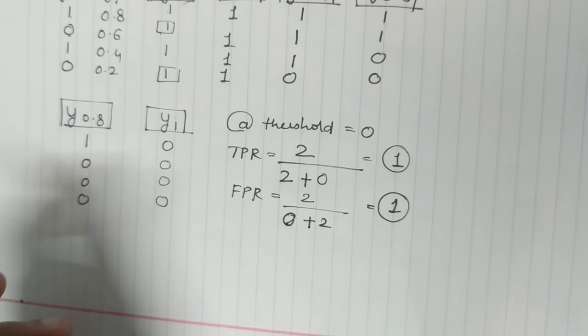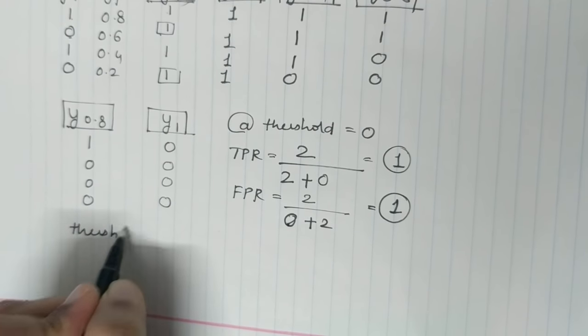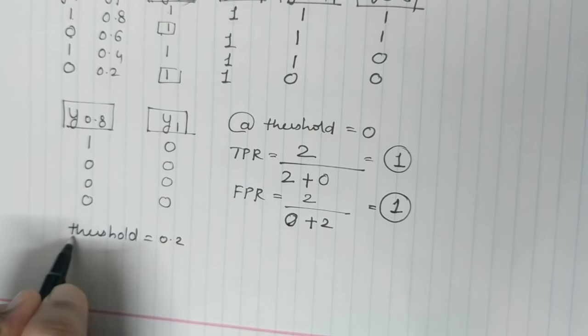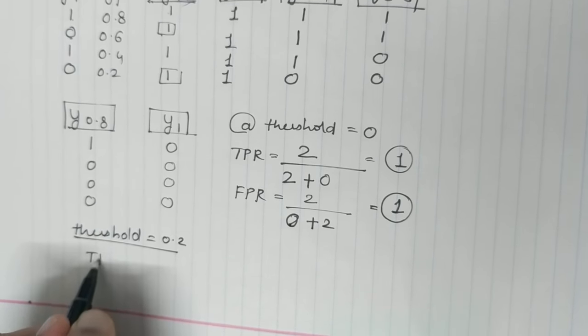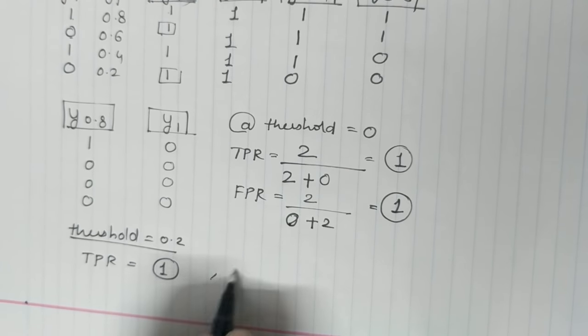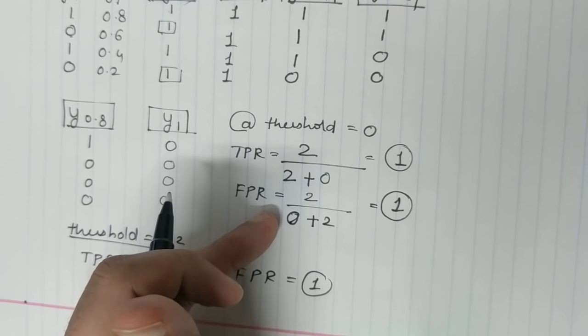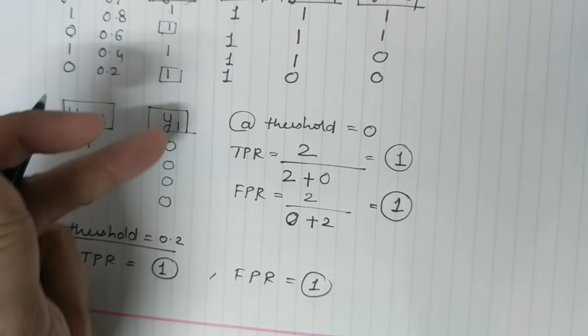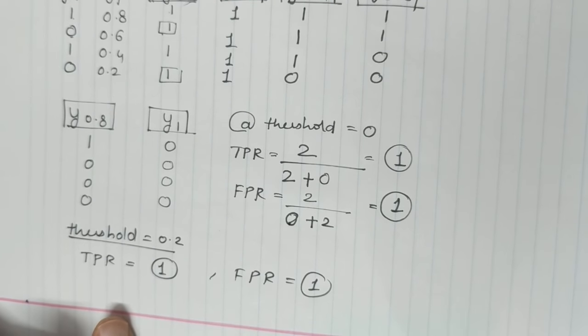Similarly, I do the same for threshold equal to 0.2. At threshold equal to 0.2, my true positive rate by calculation comes out to be 1 and false positive rate comes out to be 1, which is basically the same calculation because 0.2 is equal to 0. So the calculation remains the same. I hope this is clear till now.